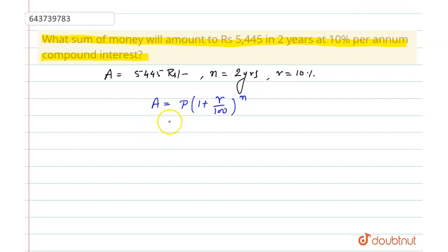We will put the values that are given in the question. So amount is 5,445, principal we need to calculate, 1 plus 10 by 100, power 2. So here we will get 5,445...